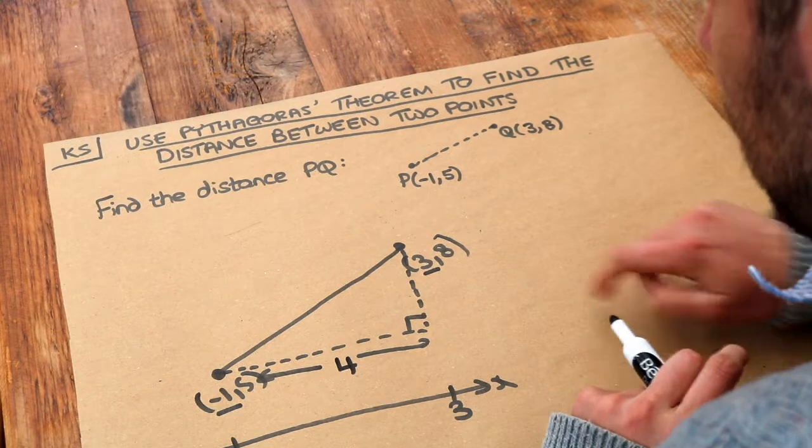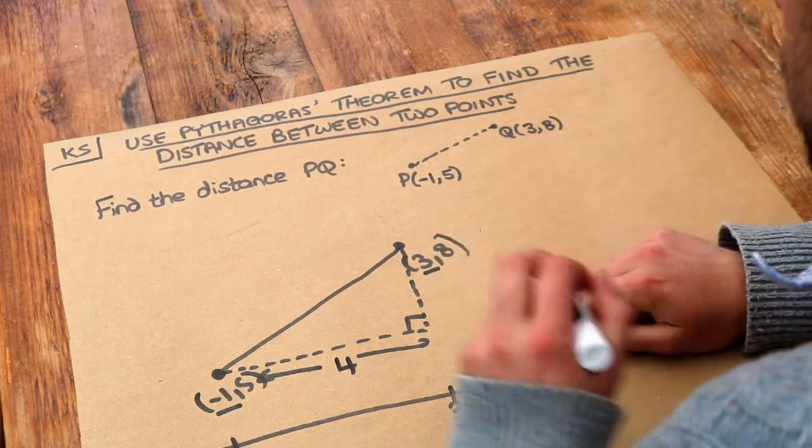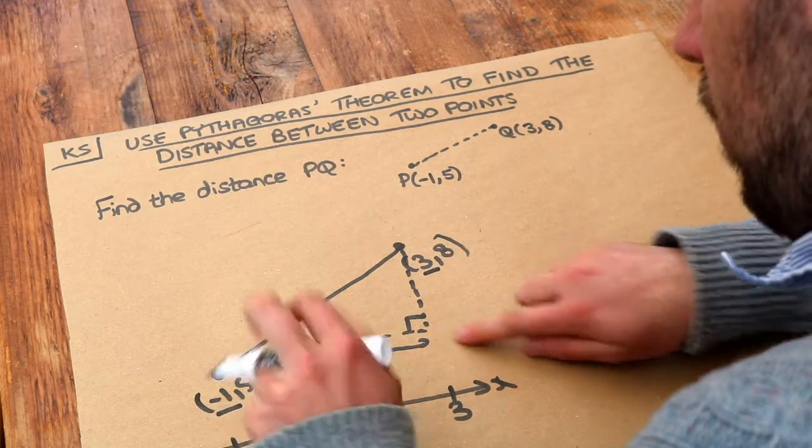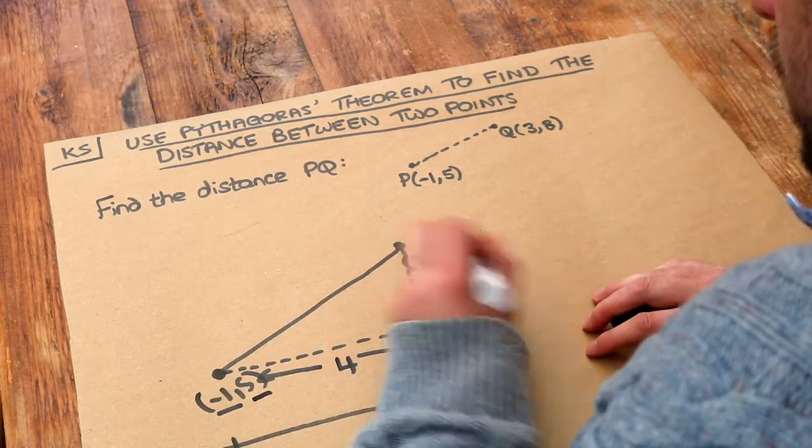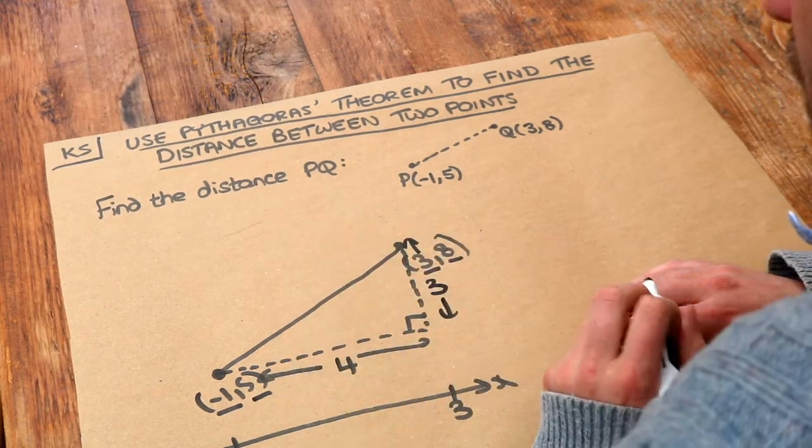And we can similarly do the same thing with the y values to find this height of the triangle. What's the difference between this y value of 5 and this y value of 8? Well it's 3. So this distance is 3.